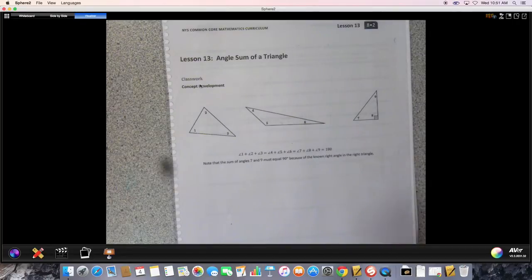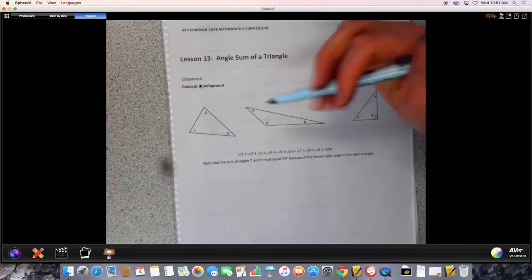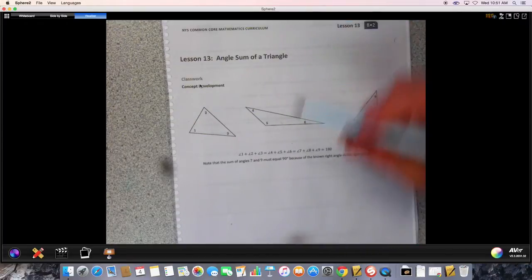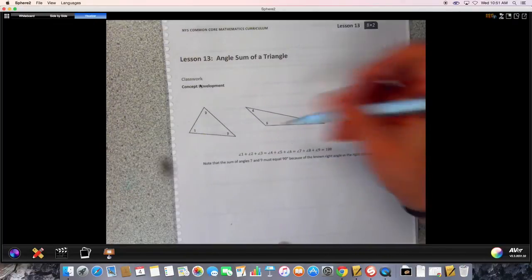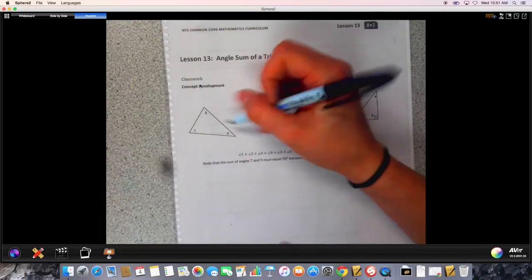The angle sum of any triangle, whether it looks like this or like this or like this, will be 180 degrees.